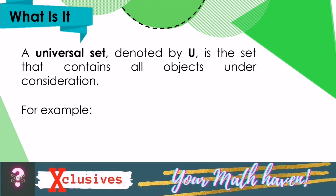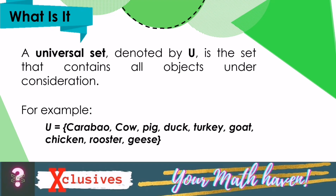For example, let us say that the group of farm animals in the Philippines is a universal set. Then we have U is equal to carabao, cow, pig, duck, turkey, goat, chicken, rooster, and geese.